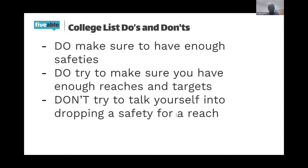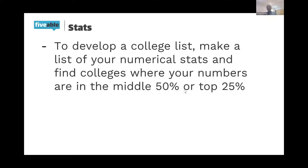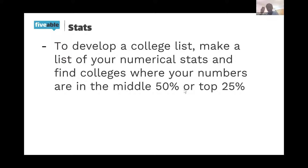To develop your college list, start by making a list of your numerical stats — SAT, GPA, SAT subject scores. Fill out all the things that have numbers. Then go down the list of colleges you want and see where your numbers fall in relationship to that school's major. Don't do it overall, because that trips a lot of people up. If you're applying to a very competitive major, make sure you're within the bounds for that major, not just the school overall.